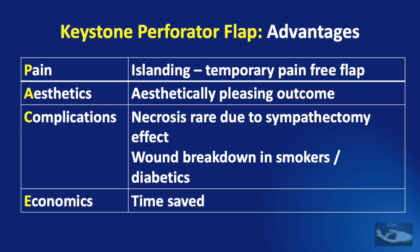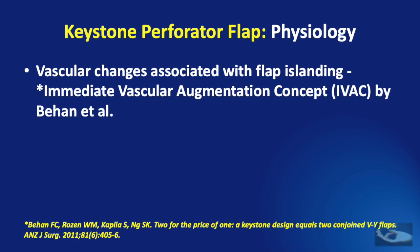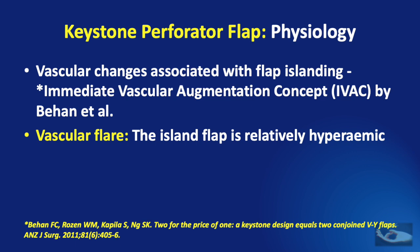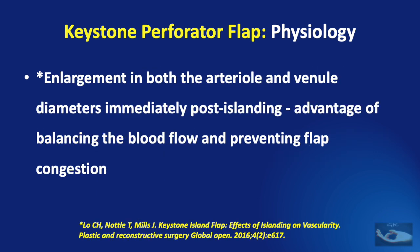Let us now understand the physiology and biomechanics of movement of this flap. There are vascular changes that occur with islanding, termed the Immediate Vascular Augmentation concept by Behan et al., proposed in 2011. The first sign is the vascular flare — the islanded flap becomes relatively hyperemic, thought to be due to the sympathectomy effect. The second sign is bleeding at the points where the flap is pierced by sutures during insetting, called the red dot sign. Studies showed enlargement of both arteriole and venule diameters immediately post-islanding, giving the advantage of balancing blood flow and preventing flap congestion.